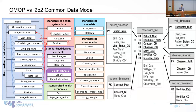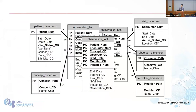OMOP has tables for all of the different types of domains you might want to query — for drug exposure, for condition occurrences, for measurements which include lab values and other things. So you might look at this and say they're completely different designs — there's no way a program designed to talk to a star schema could talk to that very different schema.